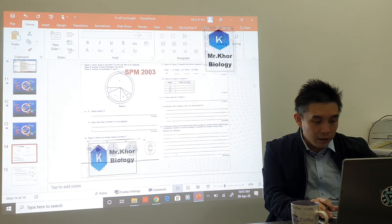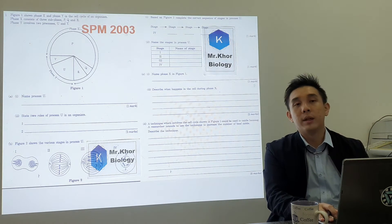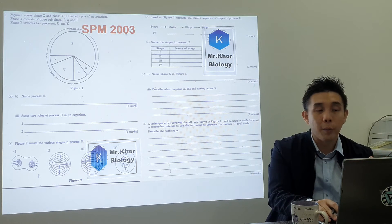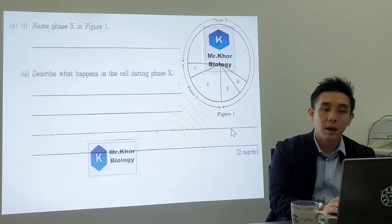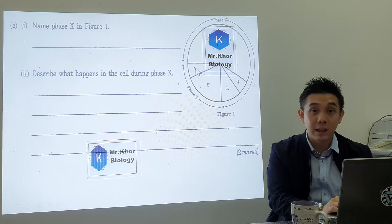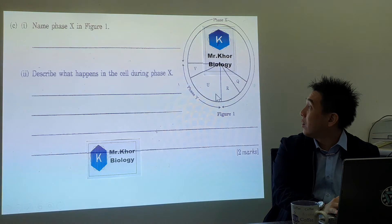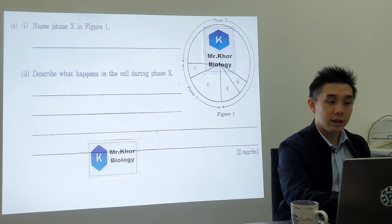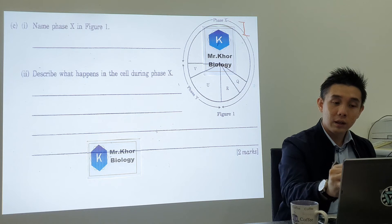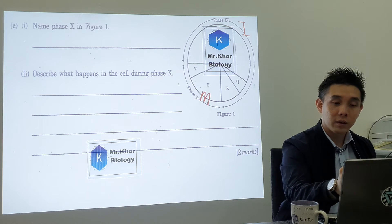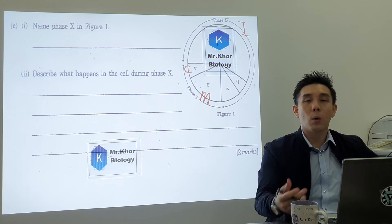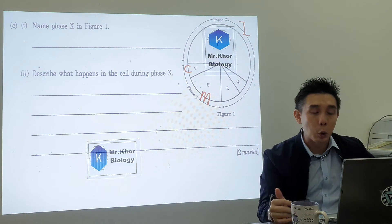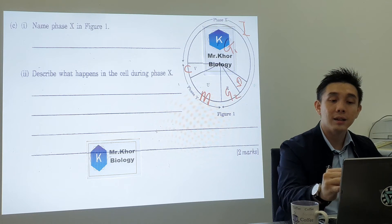Now let's look at an SPM 2003 exam question to make sure you understand the cell cycle well. The cell cycle has three parts: interphase, M-phase, and cytokinesis. Within interphase are three phases — G1, S, and G2. The question asks: what is Phase X in interphase, and what happens in the cell during it?